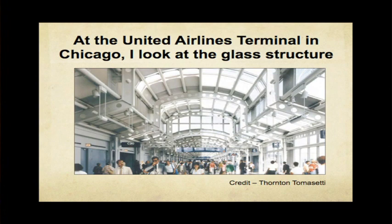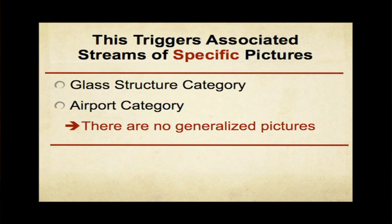I see the United Airlines terminal in Chicago. I can then start Googling in my mind glass structures or airports. There are no generalized pictures. I was shocked to find out about 20 years ago — I asked a speech therapist, a very verbal thinker, about church steeples. She said 'oh, pointy thing' — very vague. And I'm going, wait a minute. There's no vague thing like that in my mind. I only see specific ones.